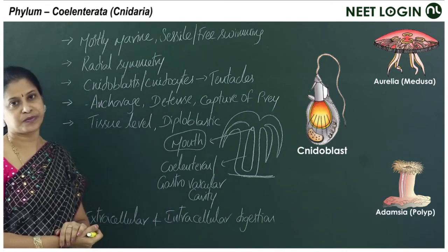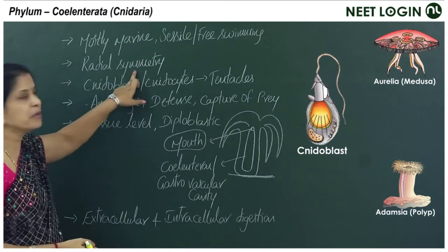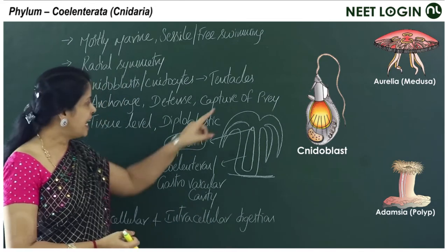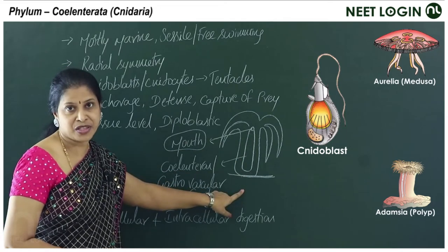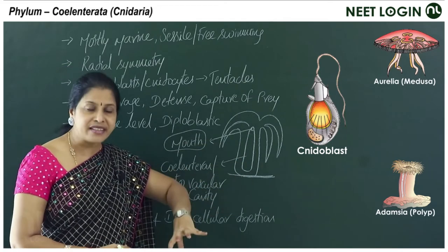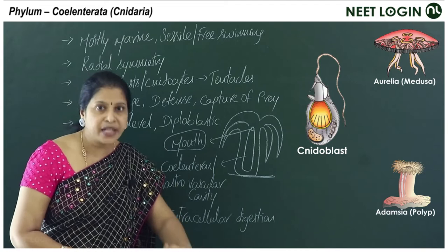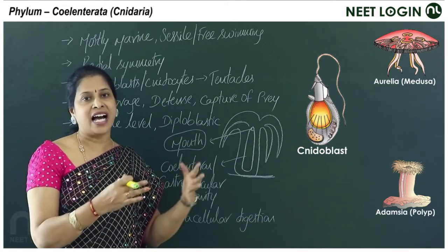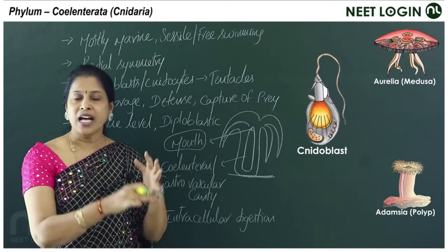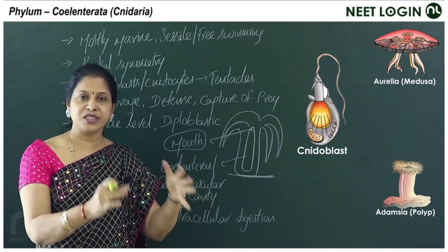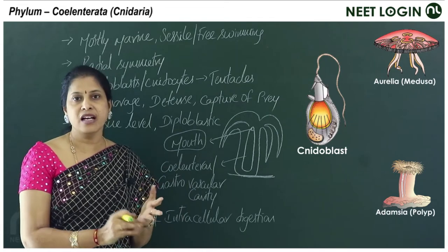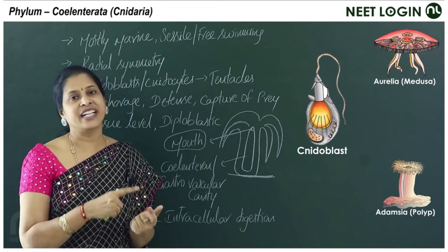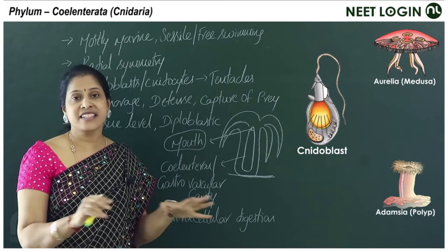As tissues are seen for the first time in these animals, they are the true or 'eu' metazoans. Coming to symmetry, they exhibit radial symmetry — any plane passing through the center gives rise to identical halves. They are diploblastic organisms with tissue level of organization and radial symmetry.